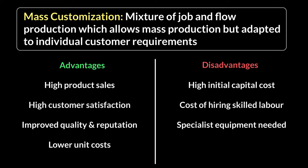The advantages of mass customization are clear. Because of the flow production element at the start, you produce in high volume, enabling high-volume sales. Additionally, giving customers the option to customize at the sales point yields higher customer satisfaction, better ratings, and more loyal customers. Since you're getting customer feedback, you can use that data to improve quality and your company's reputation — it's an inclusive two-way communication process. Producing large numbers also means lower unit costs, allowing you to charge a lower price.